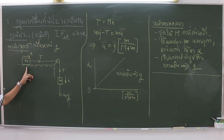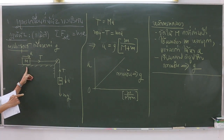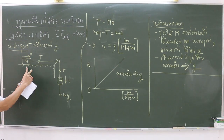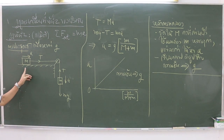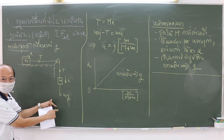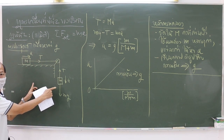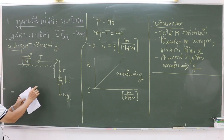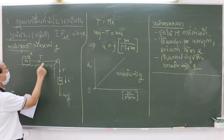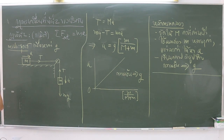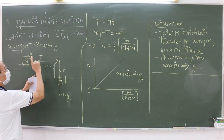Initially, the system is at rest. If we release the system, the two objects will move — one in a horizontal direction and the other one in a vertically downward direction. The two objects have the same magnitude of acceleration.